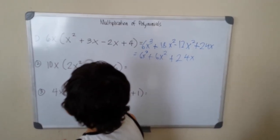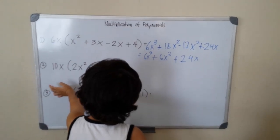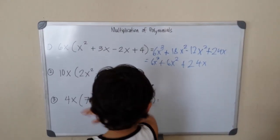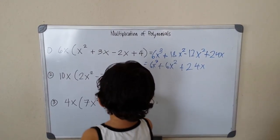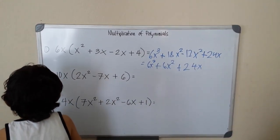Next. It's 10x times 2x squared minus 7x plus 6. That's my second question.